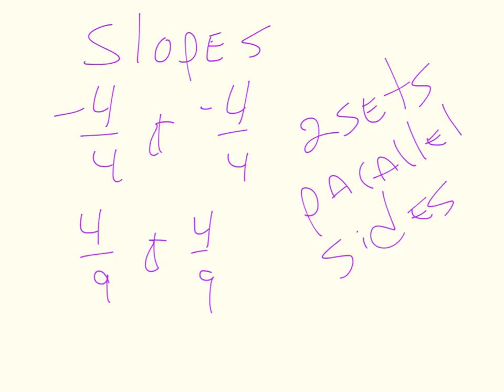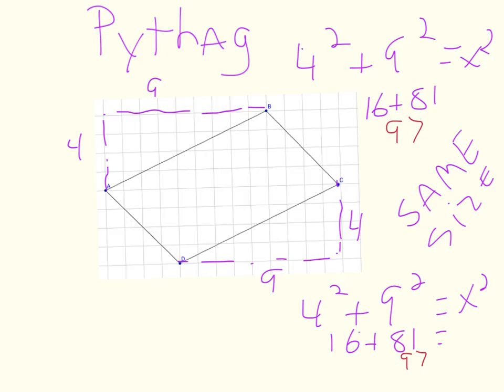So since we have two sets of slopes that are the same, we've got two sets of parallel sides. Now that two sets of parallel sides sets us into a parallelogram family. And that could be rhombus, could be rectangle, could be square. But the slopes weren't negative reciprocal, so it's not rectangle or square. But is it a parallelogram or a rhombus?